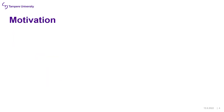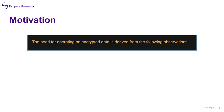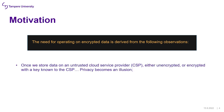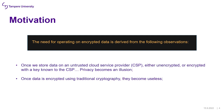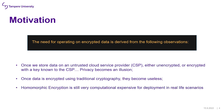The motivation of this work: once we store data on an untrusted cloud service provider, either unencrypted or encrypted with a key known to the CSP, privacy becomes an illusion. Once data is encrypted using traditional cryptography, it becomes useless in the sense that any modification requires downloading, decrypting, modifying locally, re-encrypting, and re-uploading to a CSP. Finally, despite its advantages, homomorphic encryption is still very computationally expensive for deployment in real-life scenarios — which is why we need hybrid homomorphic encryption.